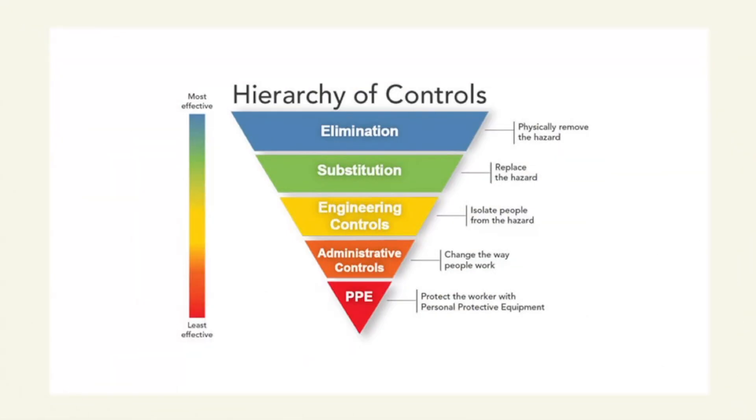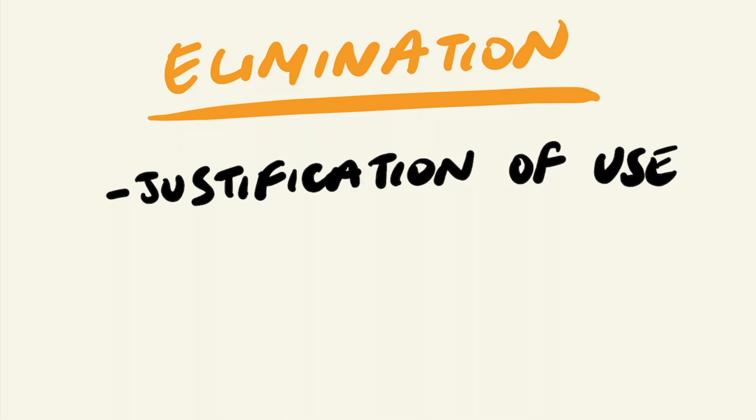So if we incorporate this into the hierarchy of control model, for elimination, if the exposure to radiation cannot be justified, then it should not occur and be eliminated from the work process.